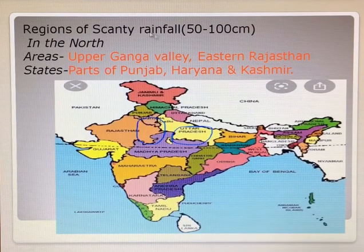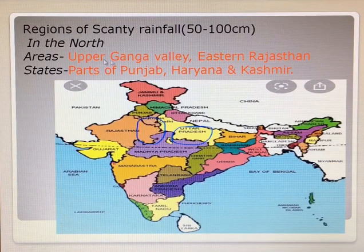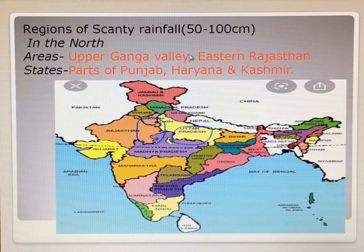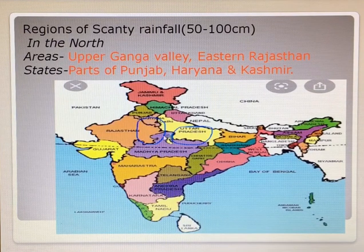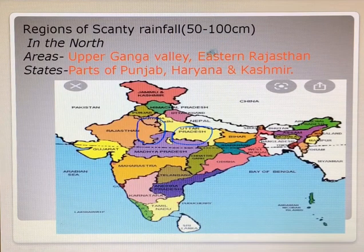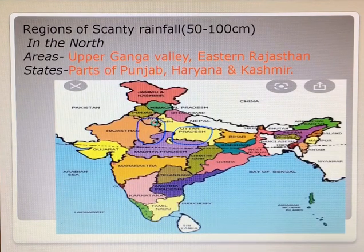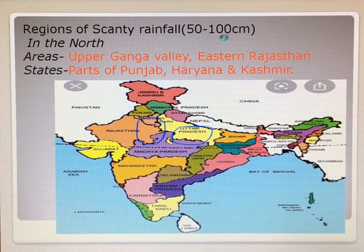Next are the regions of scanty rainfall, with a range of 50 to 100 cm. We will go through the northern part first. Areas like the Upper Ganga Valley and eastern Rajasthan — these are the areas where it rains between 50 to 100 cm. States like parts of Punjab, Haryana, and parts of Kashmir also receive rain between 50 to 100 cm.